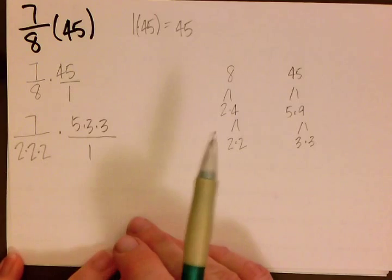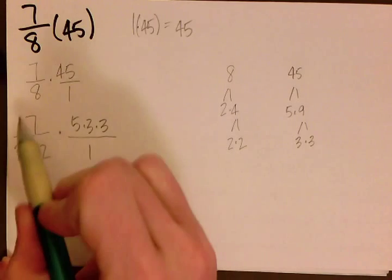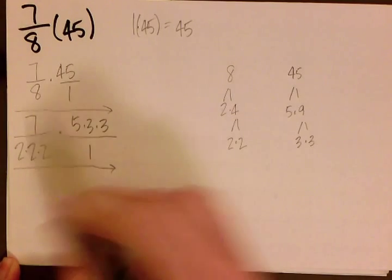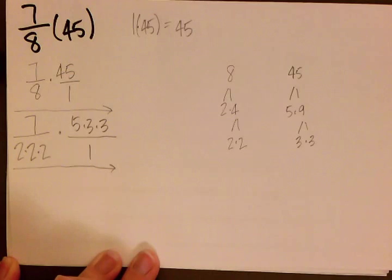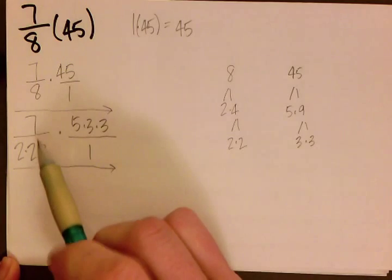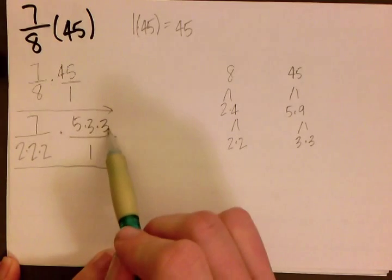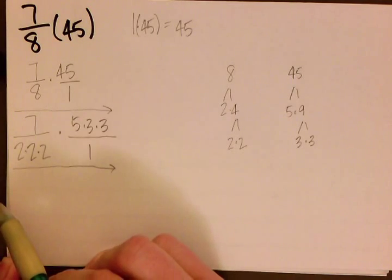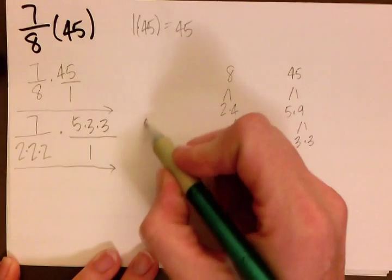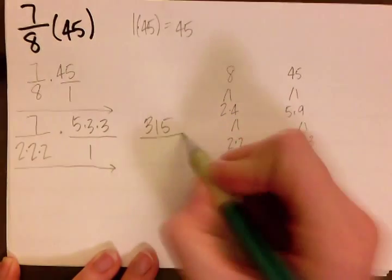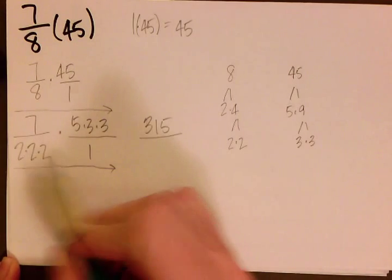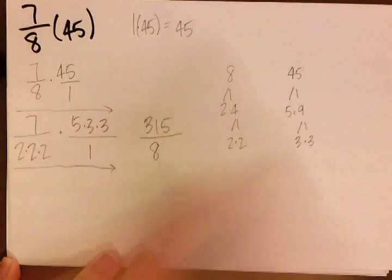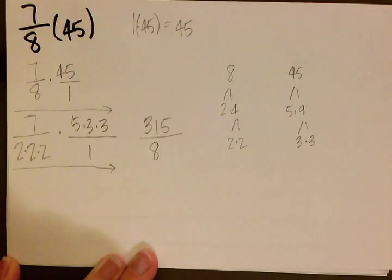So what we want to do then is just do the multiplication. Remember that whenever we are multiplying fractions we just go straight across — we multiply the numerator by the numerator and the denominators by the denominators. So we have 7 times 5 times 3 times 3. Now remember that 5 times 3 times 3 is 45, so we could also multiply 45 times 7, and when we do we get 315. And then we have 2 times 2 times 2, which we know is 8. So that gives us 315 over 8.